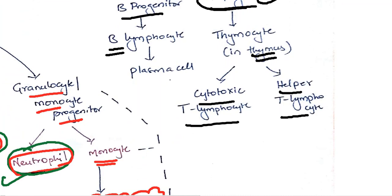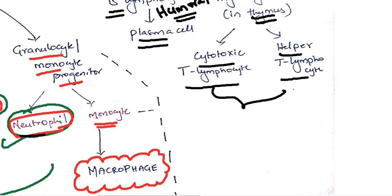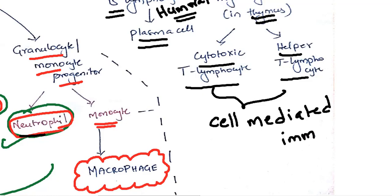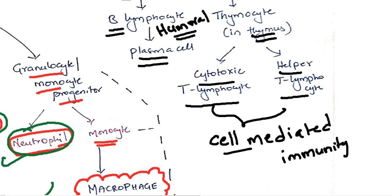B lymphocytes give rise to plasma cells. You have to remember that B lymphocytes are involved in humoral immunity, while T lymphocytes are involved in cell-mediated immunity. These are acquired immunity, not innate immunity.